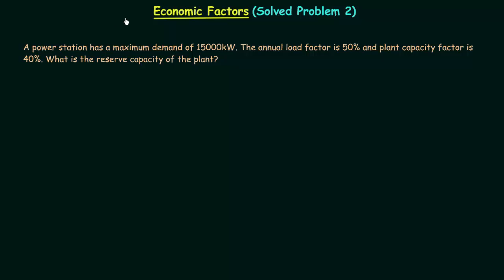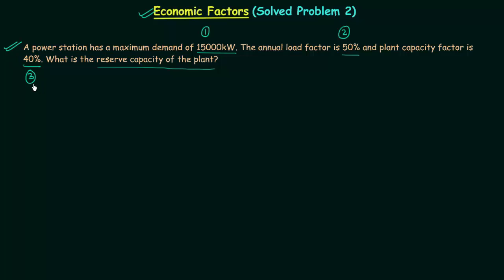In this lecture we will solve another problem based on economic factors of a power plant. In this particular problem we need to calculate the reserve capacity of the plant. A power station has a maximum demand of 15,000 kilowatt. The annual load factor is 50% and the plant capacity factor is 40%. Using these three pieces of information we will calculate the reserve capacity of the plant.